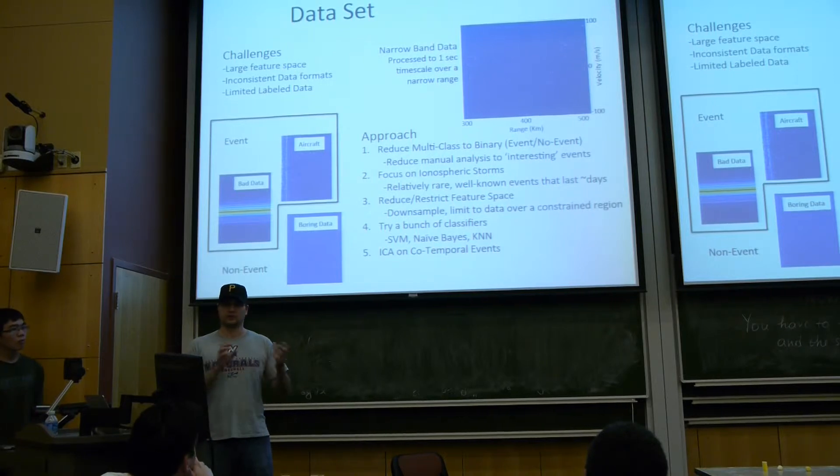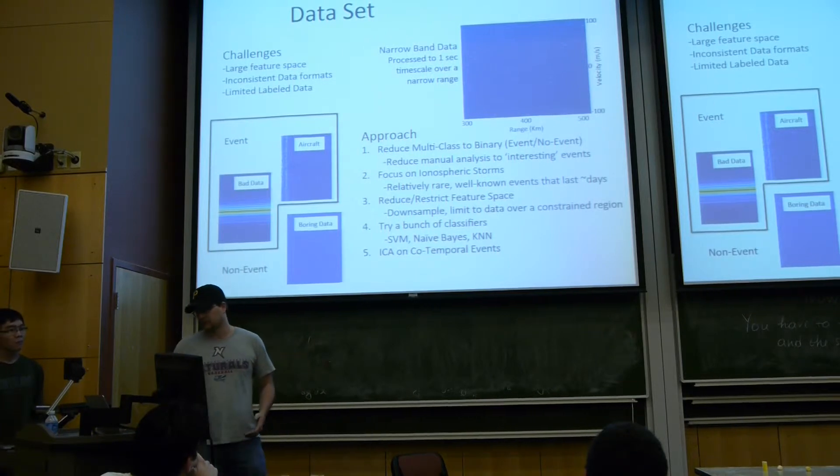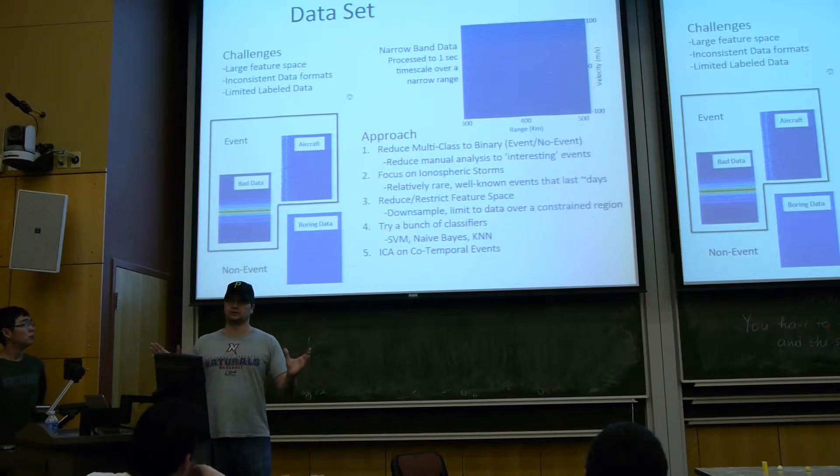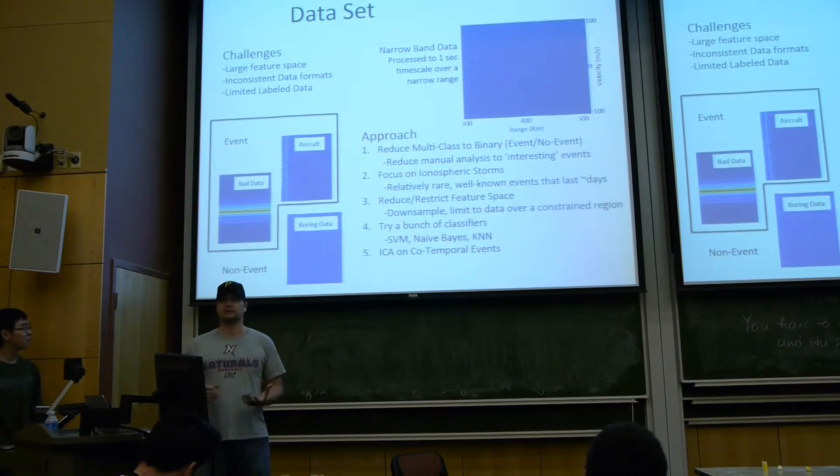We ran into problems earlier when we were trying to compare different data sets from different days that had been processed over different regions. We were basically throwing out data that didn't process over a certain range and down-sampling our feature space to try to simplify this problem.